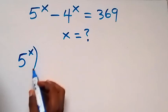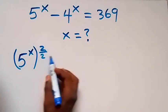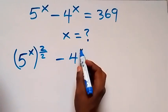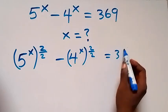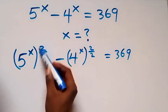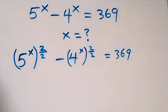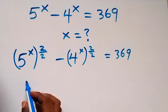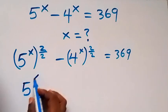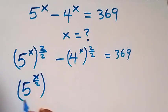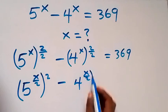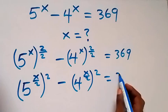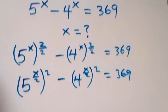We can write this as 5 raised to power x, then raised to power 2 divided by 2, minus 4 raised to power x, then raised to power 2 over 2, equals to 369. We've done nothing here since 2 over 2 is 1. From the law of indices, we can rewrite this as 5 raised to power x over 2, squared, minus 4 raised to power x over 2, squared, which equals 369.